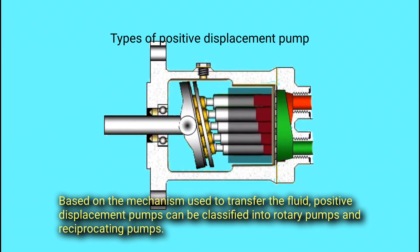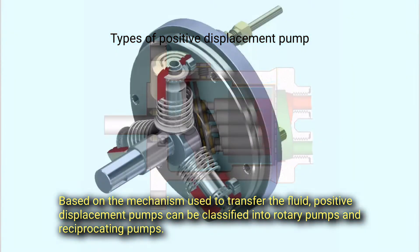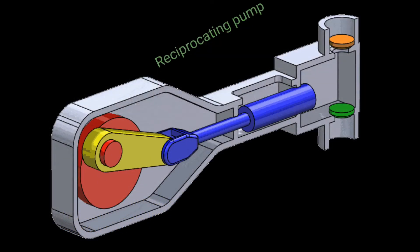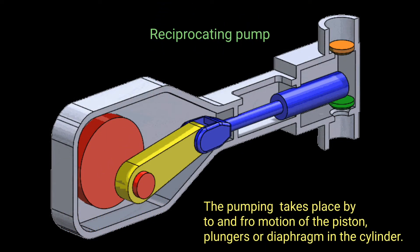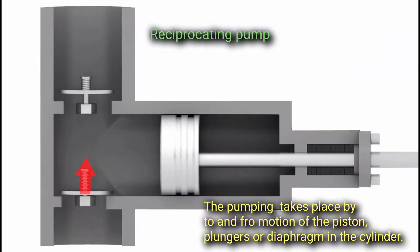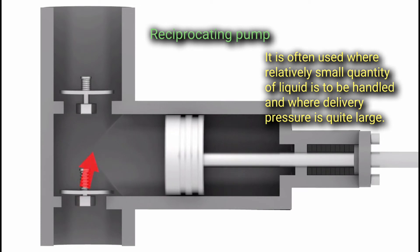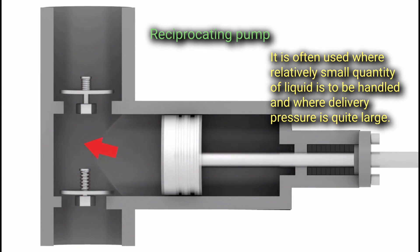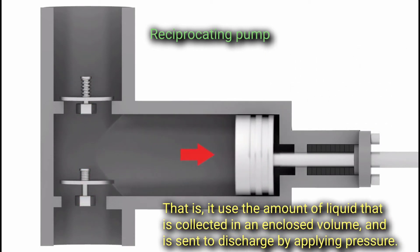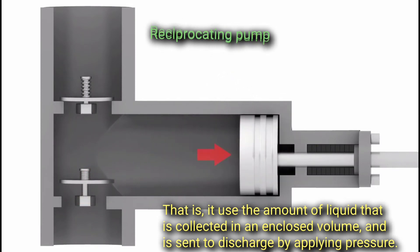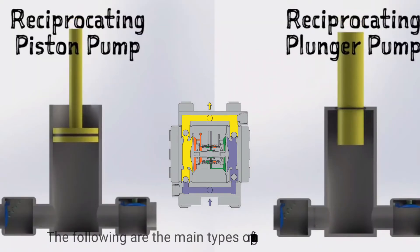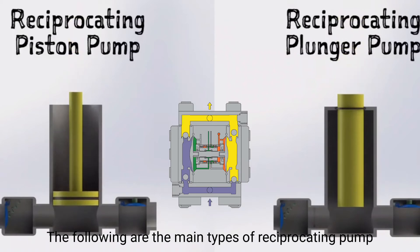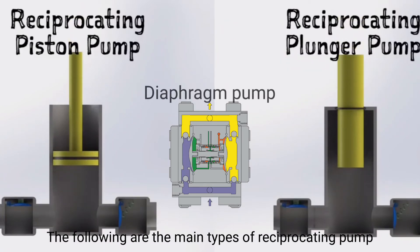Positive displacement pumps can be divided into rotary pumps and reciprocating pumps. In reciprocating pumps, pumping takes place by the to-and-fro motion of a piston, plunger, or diaphragm in a cylinder. They are often used where a relatively small quantity of liquid is to be handled and where delivery pressure is quite large. The main types of reciprocating pumps are: piston pumps, plunger pumps, and diaphragm pumps.